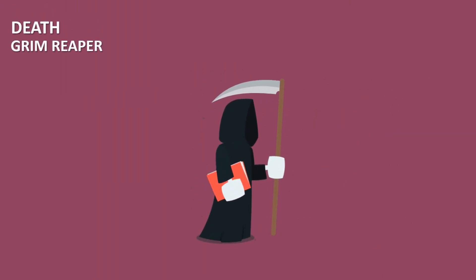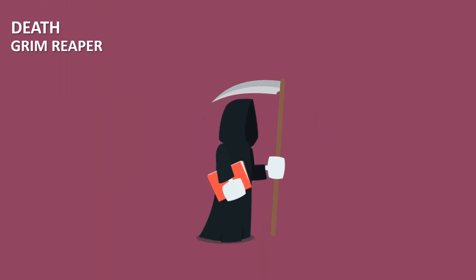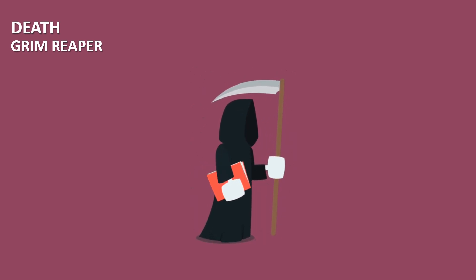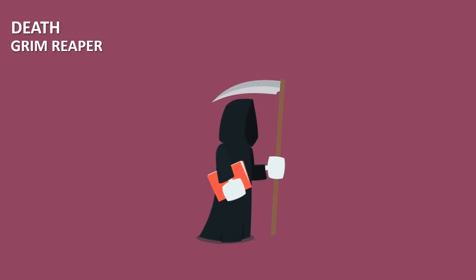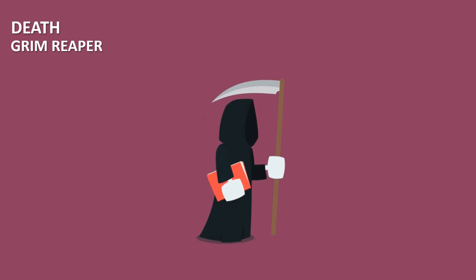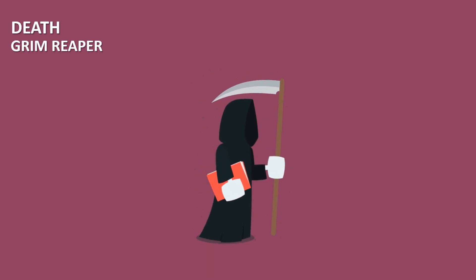The Grim Reaper is a symbolic figure of death, often portrayed as a cloaked skeleton with a scythe. Representing mortality, it guides souls to the afterlife in folklore and popular culture.